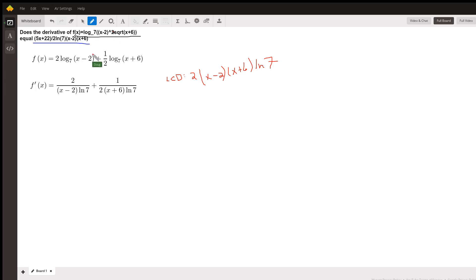In other words, x minus two, the quantity squared, I move this two down front. And the square root of x plus six is understood to have a fractional exponent of one half. So that moves down front.